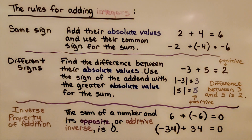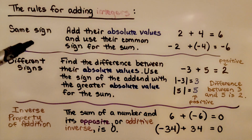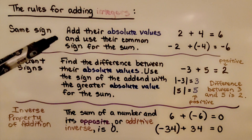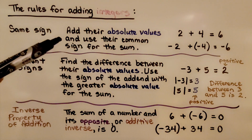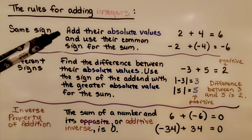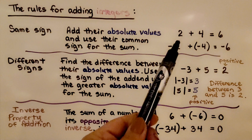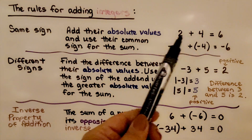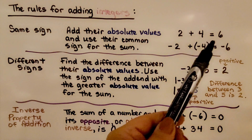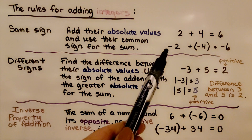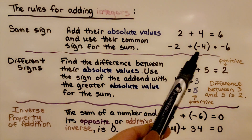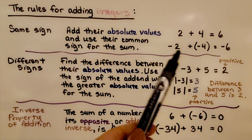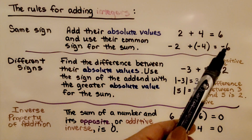Here are the rules for adding integers. When we have the same sign for the addends, we add their absolute values and use their common sign for the sum. We have a positive two plus a positive four — they're both positive, so the sum will be positive. We have a negative two and a negative four — they're both negative, so the sum will be negative.